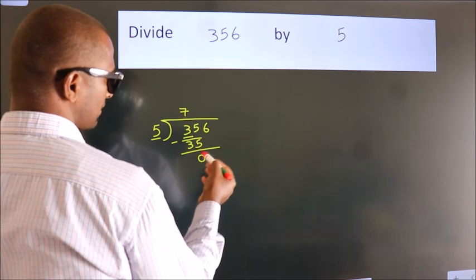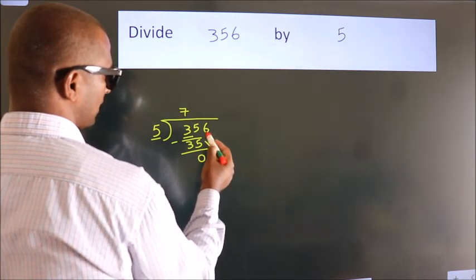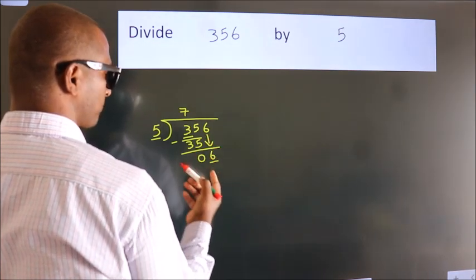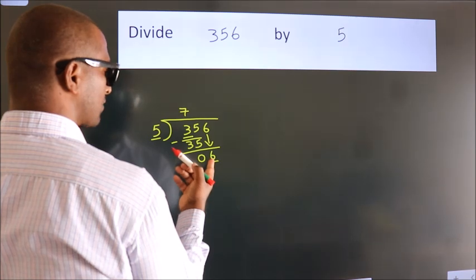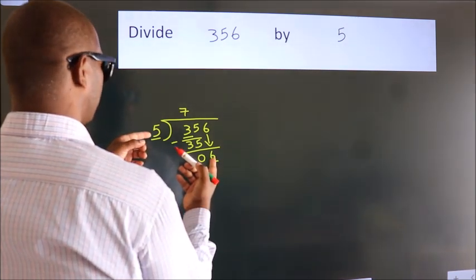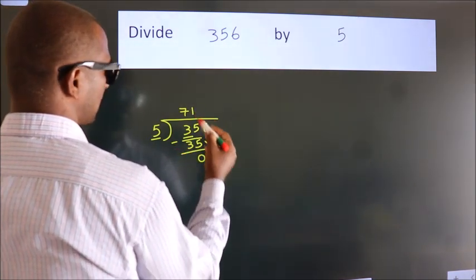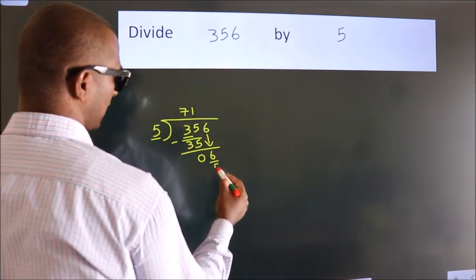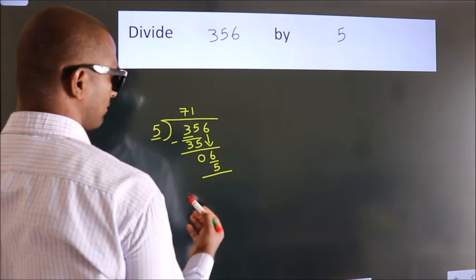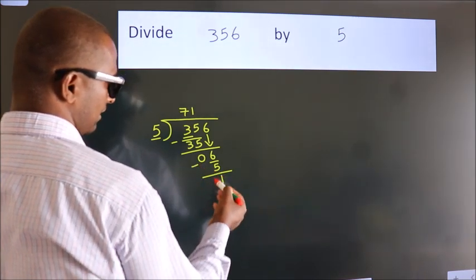After this, bring down the beside number — so 6 comes down. A number close to 6 in the 5 times table is 5 ones, which is 5. Now we subtract and we get 1.